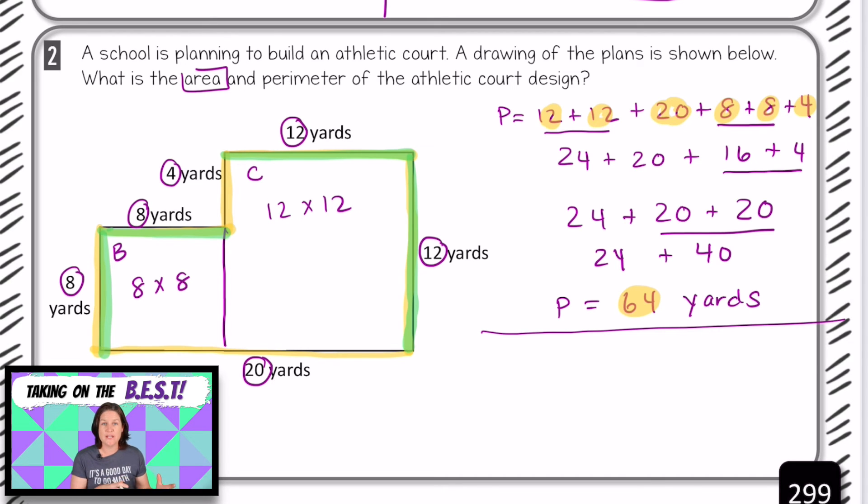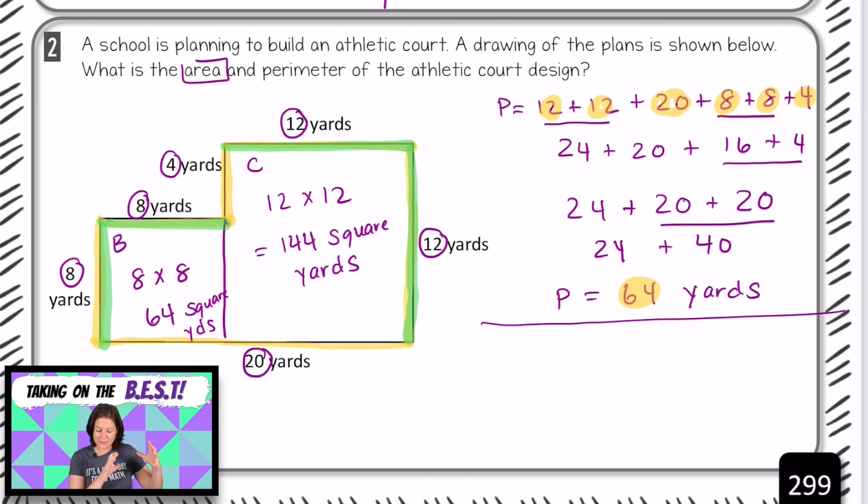So go ahead and find what 8 times 8 equals and write it down. And figure out what 12 times 12 equals and write it down. Press pause to figure that out. And then join me to make sure that your answer is correct. All right, welcome back. So what is 8 times 8? It is 64. 64. And because we're working with area, it would be 64 square yards. And then 12 times 12 equals 144 square yards.